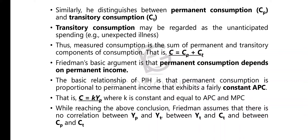Overall consumption has two parts — permanent and transitory consumption. The equation is: C = Cp + Ct. Friedman's basic argument is that permanent consumption depends on permanent income.